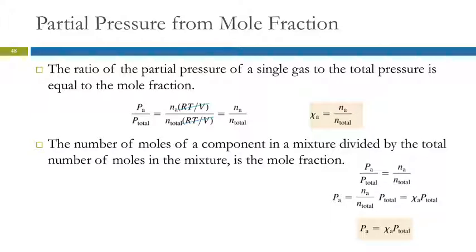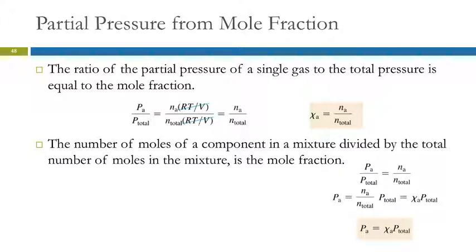Now let's talk about mole fraction, given the symbol chi (χ). The mole fraction of gas A — chi of A — equals the moles of gas A divided by the total number of moles in the sample. It's like a percentage but not multiplied by 100, so it's a fraction. Moles of an individual gas divided by moles of the total gas.